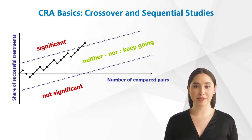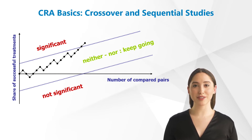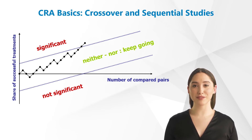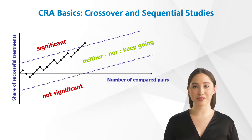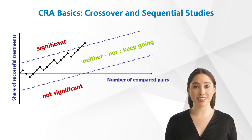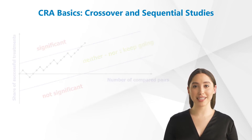In the diagram, this case applies to the point where the graph representing the subjects exceeds the threshold value for a significantly effective result or falls below the threshold value for a non-significantly effective result. Hence, the decision on the result of the study will not be made after the investigation of a previously defined population, but will rather be made in the course of the study.